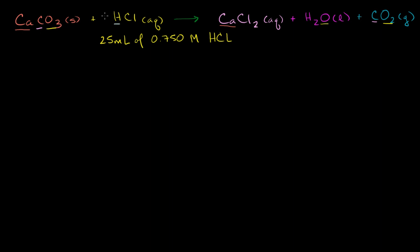So let's balance it. Let me put a 2 in front of the hydrochloric acid — the aqueous solution of hydrochloric acid. Now the hydrogens balance out. We haven't done the chlorines yet. Now we have two chlorines on the left-hand side, and on the right-hand side we have two as well. So now this equation is balanced after we put that coefficient of 2 on the hydrochloric acid.